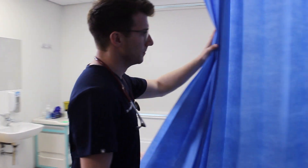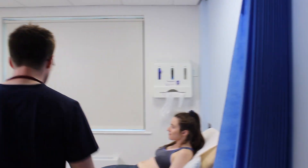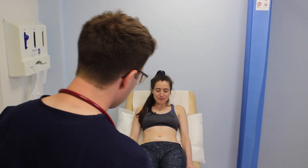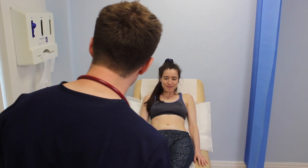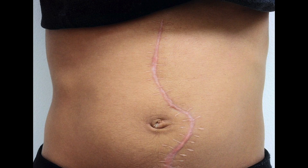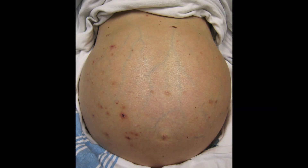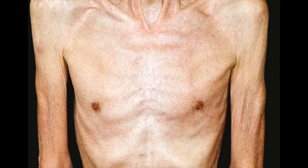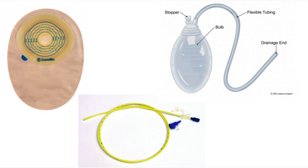Give the patient privacy to remove their clothing. From the end of the bed, inspect for clinical signs suggestive of underlying pathology. For example, you might see scars suggestive of previous abdominal surgery, abdominal distension, jaundice, cachexia, or hernias. You should also look for objects or equipment on or around the patient, such as stoma bags, surgical drains, or feeding tubes, as these can give important clues about possible underlying conditions.